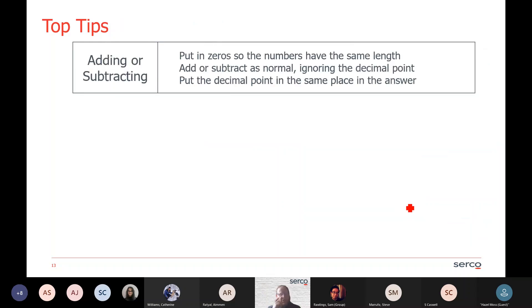I will give you the top tips as well. If you're adding or subtracting these decimals, you're putting zeros so the numbers have the same length. You then add or subtract as you would normally, just ignoring the decimal point, and then you put the decimal point in exactly the same place in the answer. So for all intents and purposes, you don't need to worry about the decimal point. Just wherever it is in the question, it goes in the same place as the answer.